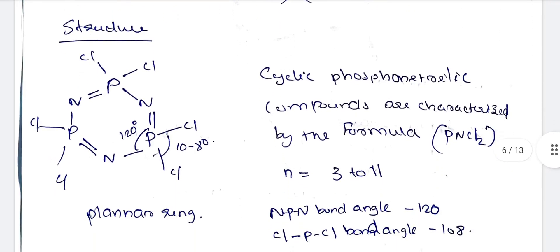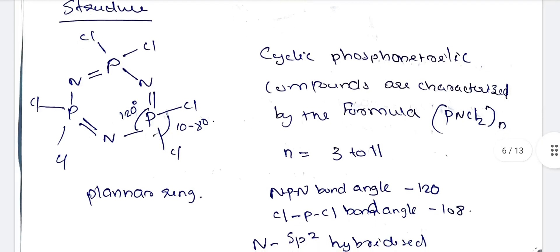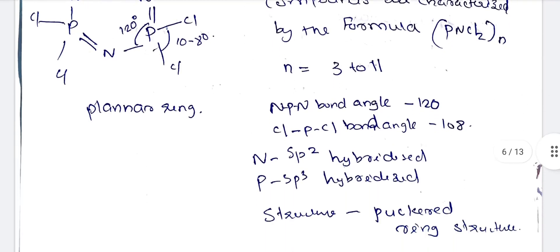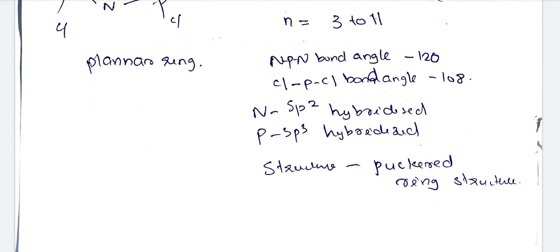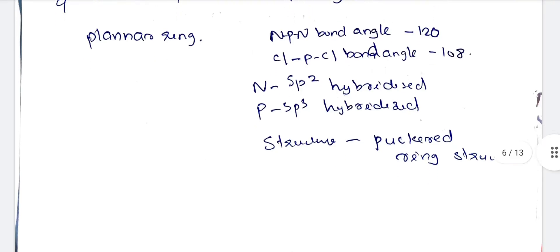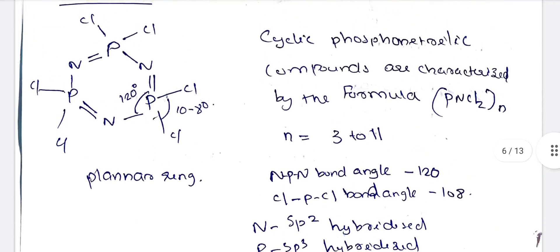The structure of phosphonitric compounds resembles a benzene structure with alternating phosphorus and nitrogen atoms, with chlorine atoms as side groups. Cyclic phosphonitric compounds are characterized by the formula PnCl2n, where n ranges from 3 to 11. The N-P-N bond angle is 120 degrees and the Cl-P-Cl bond angle is 108 degrees. Nitrogen is SP2 hybridized and phosphorus is SP3 hybridized. The structure is called a puckered ring structure.